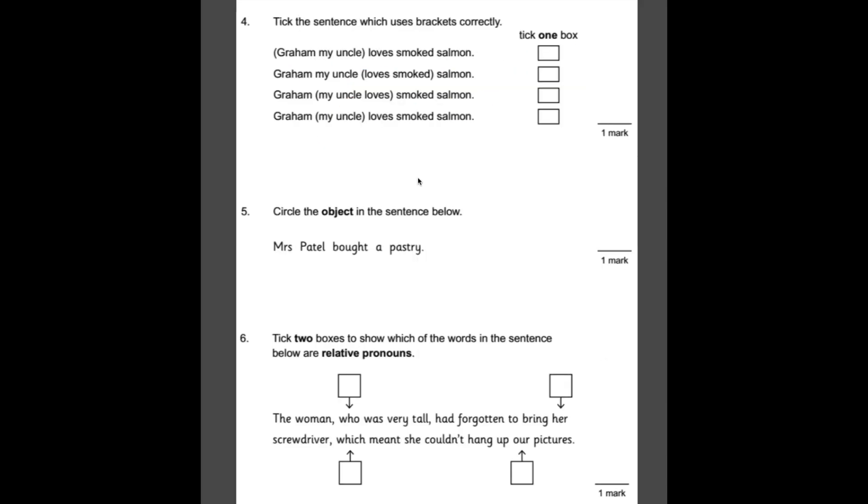Number four, tick the sentence which uses brackets correctly. So the brackets in this case are giving us a little bit of extra context about the noun, which is Graham. So the correct one here should be Graham, my uncle loves smoked salmon. That bit there is giving us a little bit extra information about Graham.